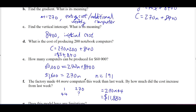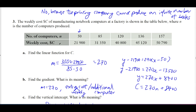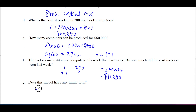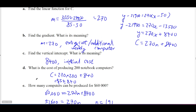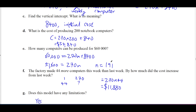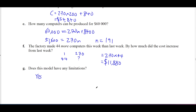Does this model have any limitations? Yes — you cannot produce an infinite number of computers at a factory. The factory is only so big, so it can't produce unlimited computers as they take up space. So the answer is yes, with that reasoning.